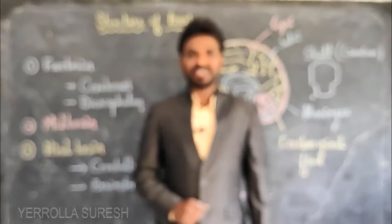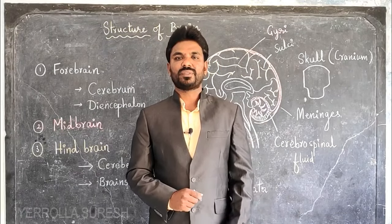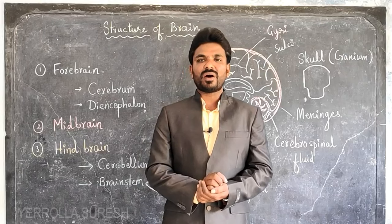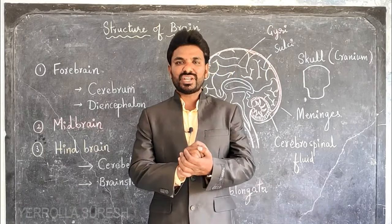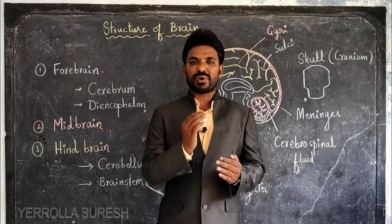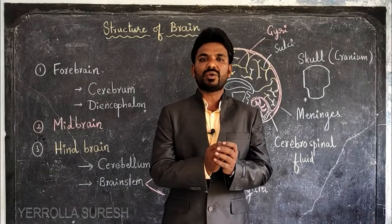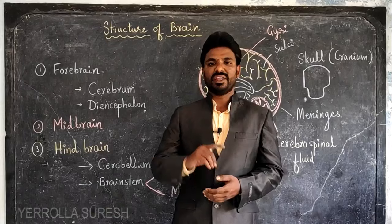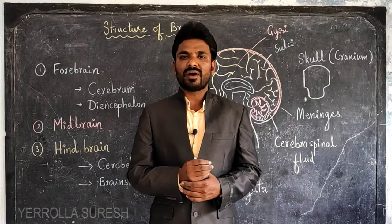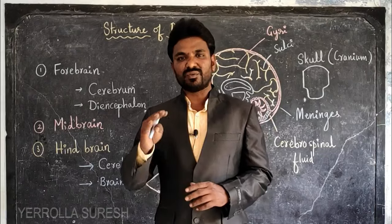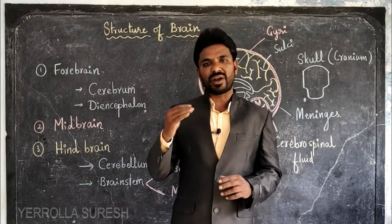Hello friends, in this session let's discuss the structure of the brain. Brain is a very important part of our body and is part of the nervous system. The nervous system includes the brain, spinal cord, and nerves. The brain is the prominent and important organ of the nervous system because it involves controlling and coordination of all body parts.